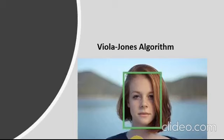The Viola-Jones algorithm is an object detection framework that provides competitive object detection rates in real time. Although it can be trained to detect a variety of object classes, it was motivated primarily by the problem of face detection.